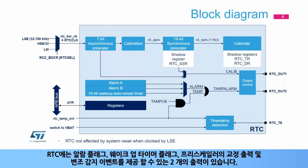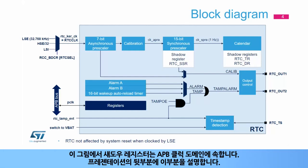The RTC has two outputs that can provide the alarm flags, the wake-up timer flag, a calibration output from the pre-scalers, and also a tamper detection event. The shadow registers belong to the APB clock domain, which is explained later in this presentation.